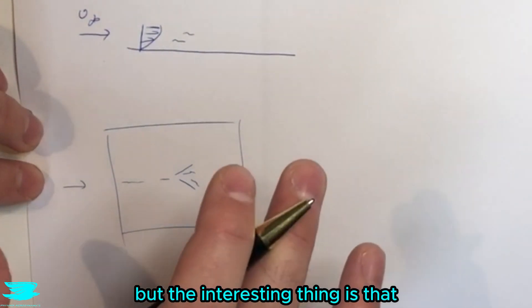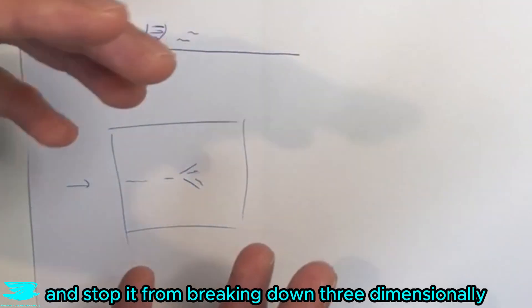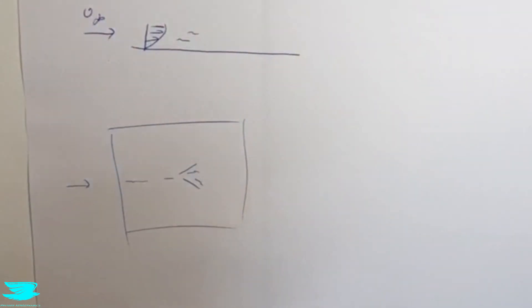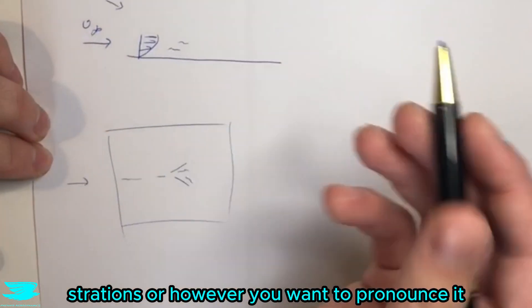But the interesting thing is that while it is two-dimensional we can actually control this and stop it from breaking down three-dimensionally. And that is by using something called longitudinal striations.